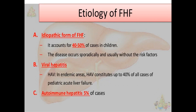The idiopathic form of fulminant hepatic failure is seen in about 40 to 50% of cases in children — the etiology was not known. Viral hepatitis — all viruses are dangerous: hepatitis A, B, C, D, E. If the liver is badly damaged, it will cause acute fulminant hepatic failure. In children, hepatitis A virus is most important, but in adults, hepatitis E, B, C, D can all cause fulminant hepatic failure.